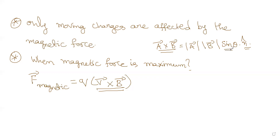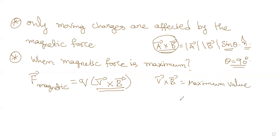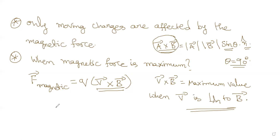If sine theta is maximum, then the cross product is maximum. Sine theta is maximum when theta is 90 degrees, which means v-bar cross B-bar takes maximum value when v-bar is perpendicular to B-bar. So the magnetic force is maximum when the velocity of the charged particle is perpendicular to the magnetic field — both at 90 degrees to each other.